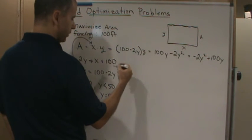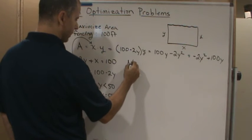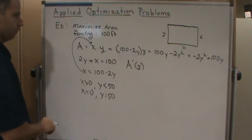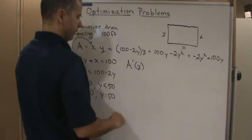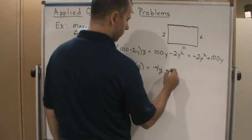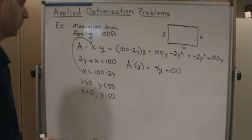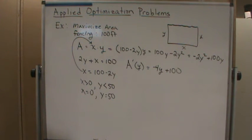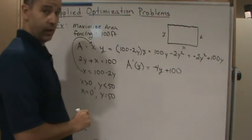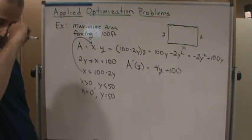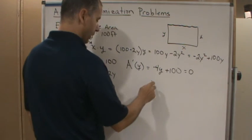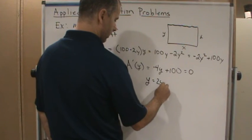We take the derivative of A with respect to y over the closed interval [0, 50]. The derivative is negative 4y plus 100. We set this equal to zero because the maximum occurs where the slope of the tangent line is zero. Solving gives y equals 25.